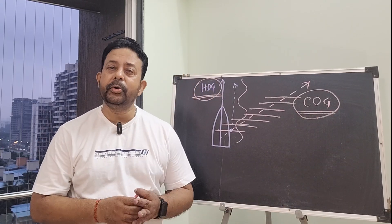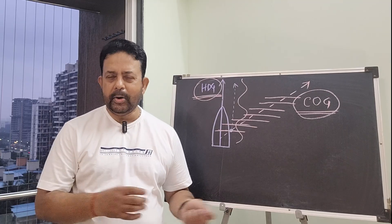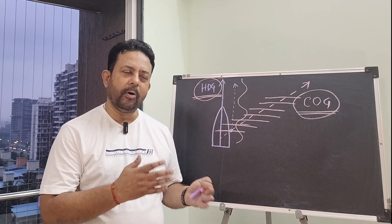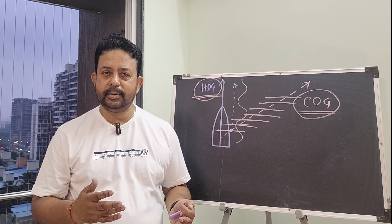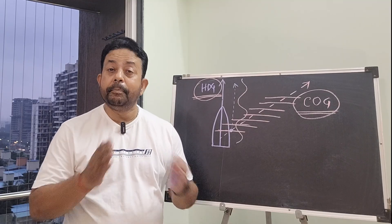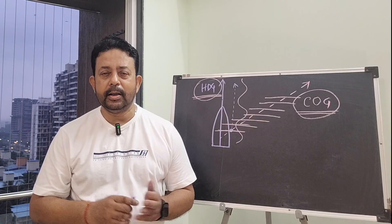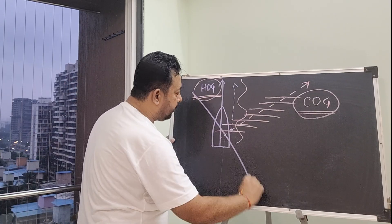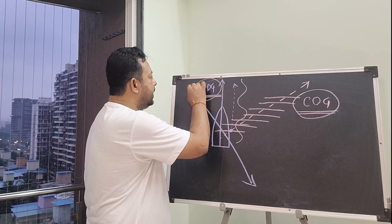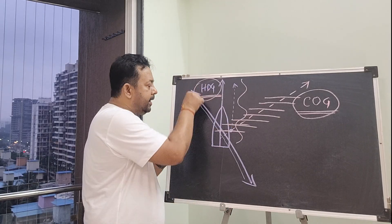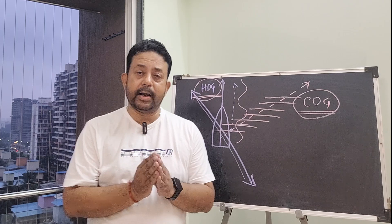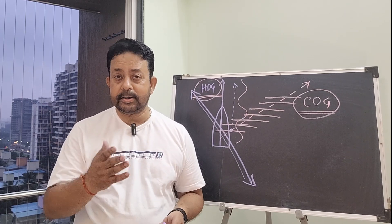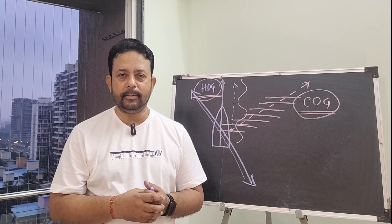So next time you go out to the field, look at the current, look at the wind, have knowledge about the sea state, and plan your lines accordingly. The best way to plan your lines is to look at the prevailing wind and current and plan your lines with the wind and current in the same direction — not in any other direction. That is the clever way to plan a survey line.